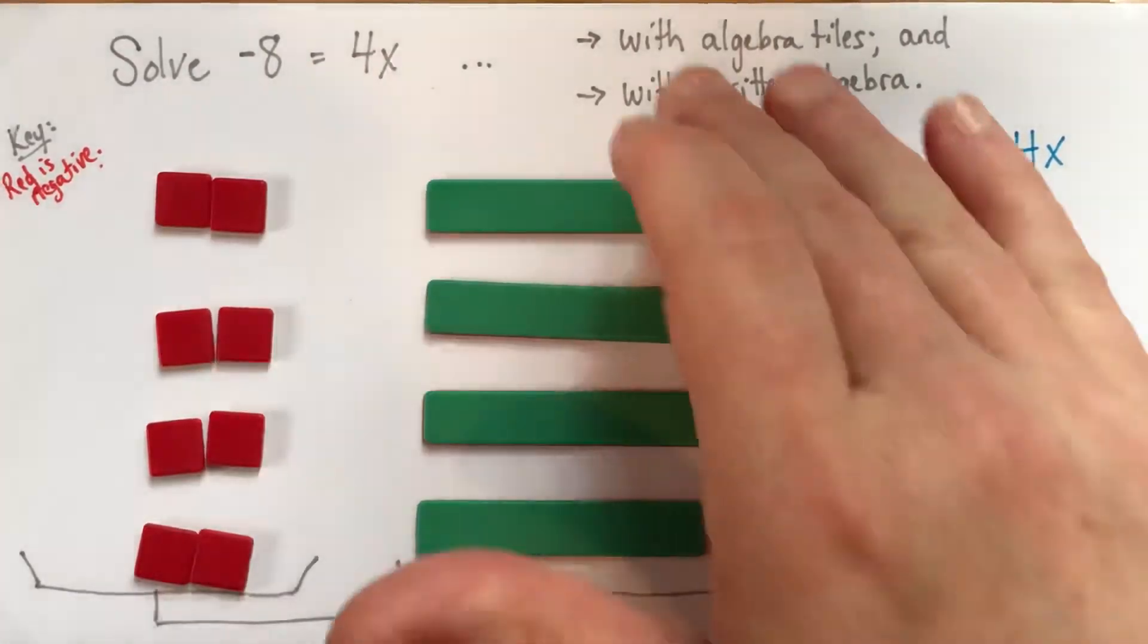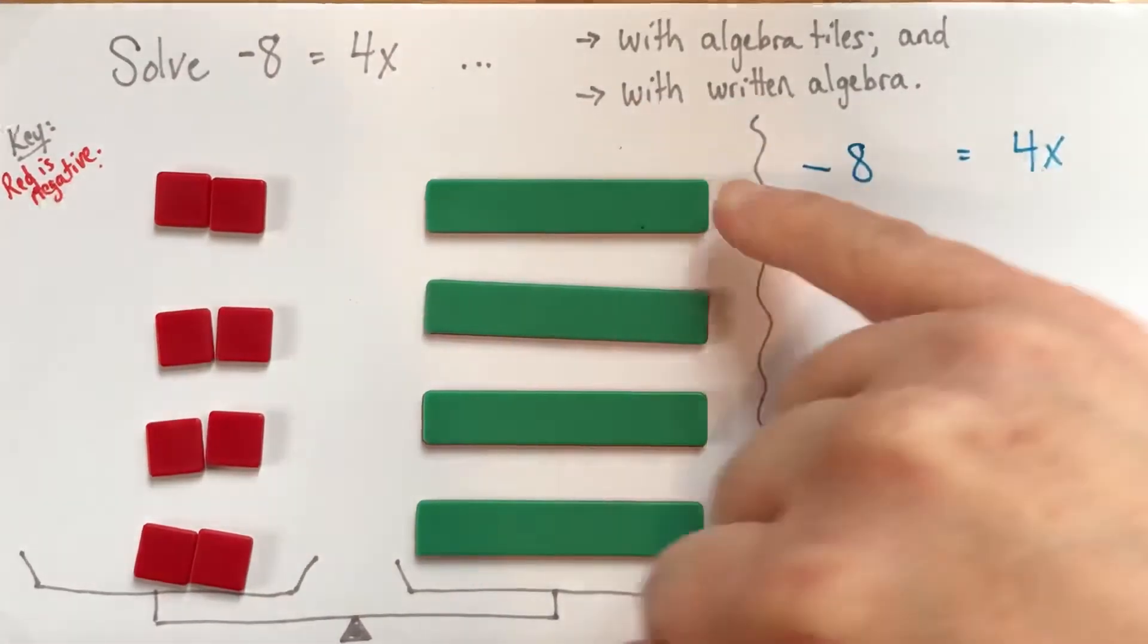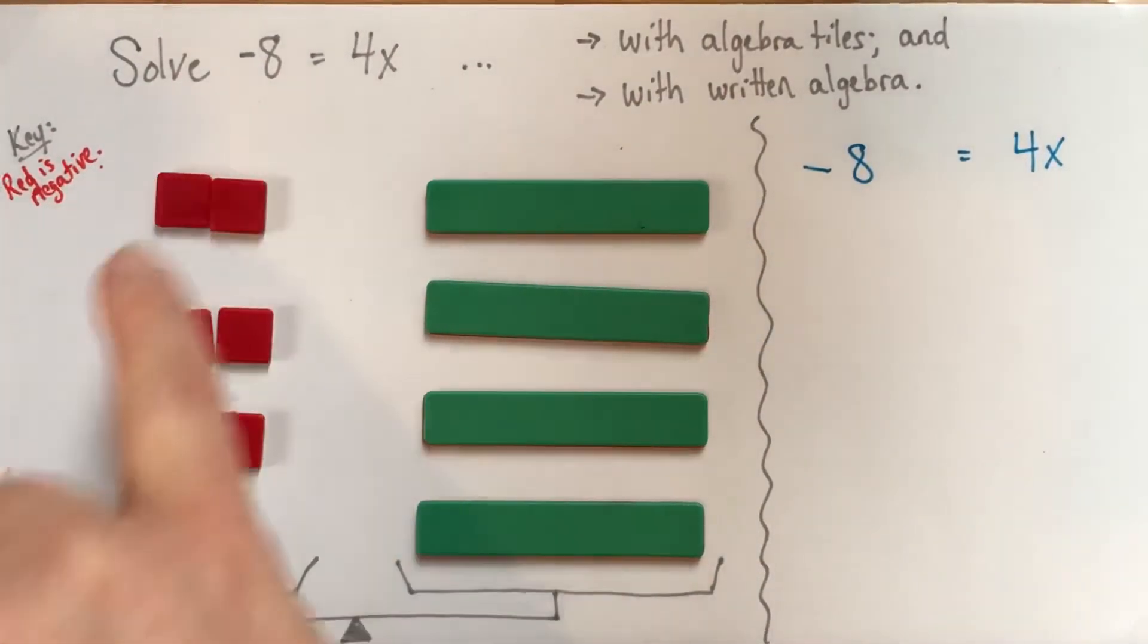And then we can take these and match them also in the 4 groups. And we can see this whole pile is equal to that whole pile, but also now it's quite clear to see that one of these is equal to one of these groups here.